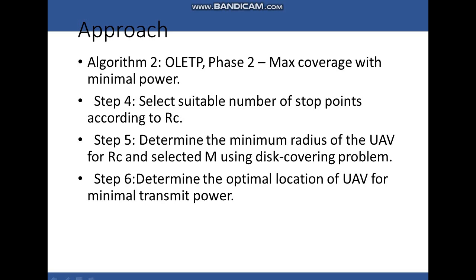Next, we use a second algorithm for maximum coverage using minimal power, where suitable stop points are selected using the appropriate value of the radius. Then we determine the minimum radius of the UAV for RC and selected M using the disc covering problem. Finally, we determine the optimum location of the UAV for minimum transmit power.